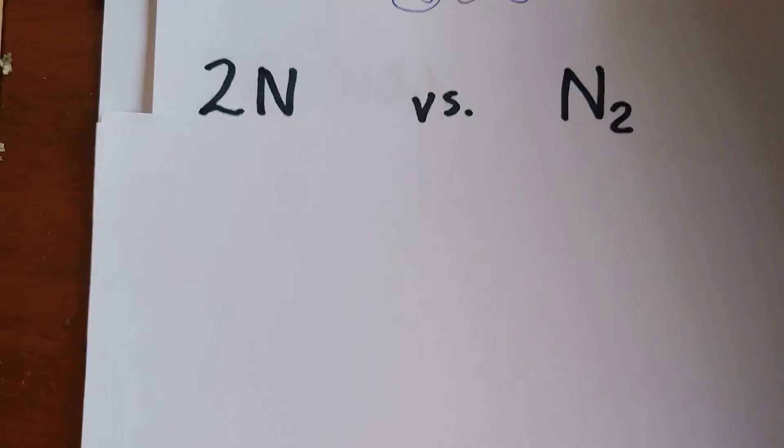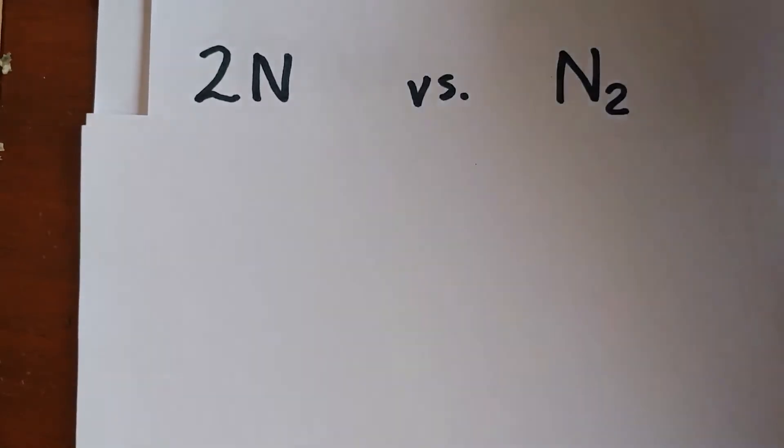Now here's an example I have that's very tricky that I put in the notes. 2N versus N2. What makes this very difficult for many students is to say, I don't know what to do with the two. And in order to make this a little bit more clear, I'm going to go ahead and draw in the understood numbers.